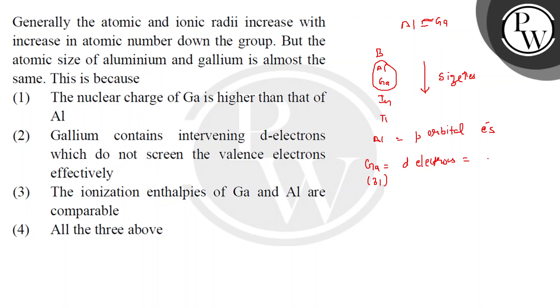D electrons. So what happens? 4s2 3d10, then 4p1.